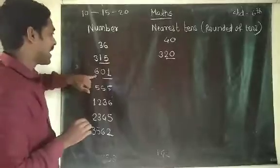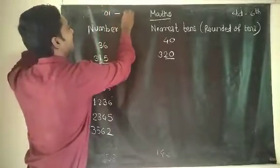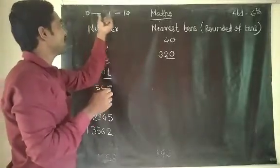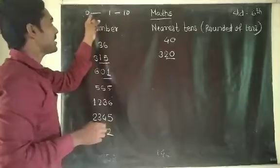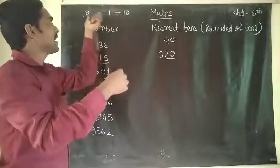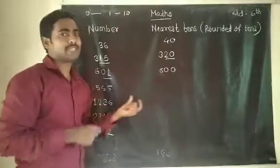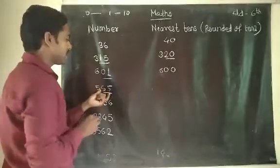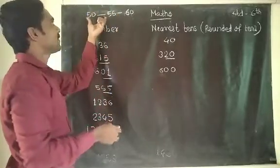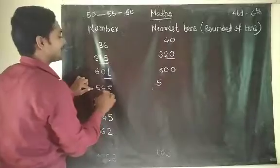For 601: take the last two digits — 01. Zero-one is between zero and ten. The nearest is zero, so we write 600. For 555: fifty-five is between 60 and 50 — the difference is the same on both sides, so we take the next tens number. Write 5 as it is and the next tens is 60, giving 560.